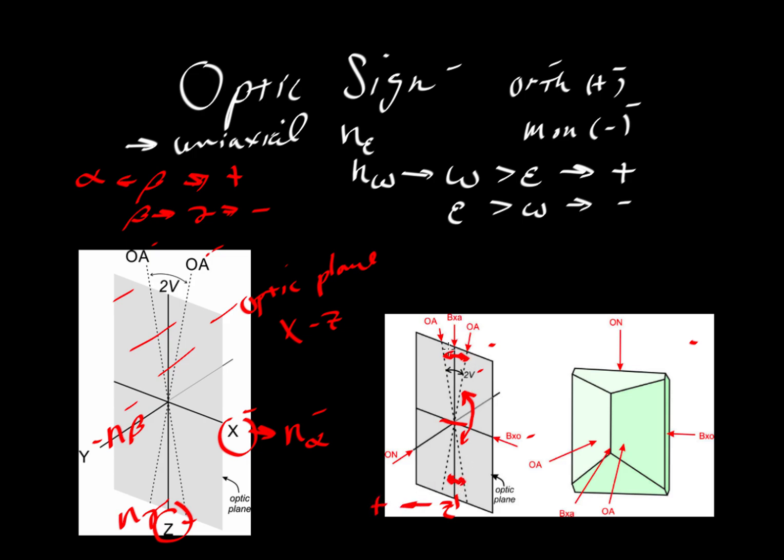On the other hand, if the acute angle is around the x-optic axis, then the mineral is negative. That's another way of thinking about positive and negative for a biaxial system.